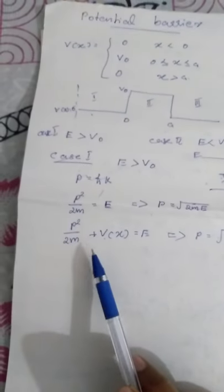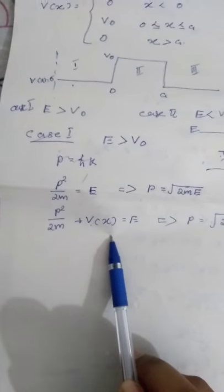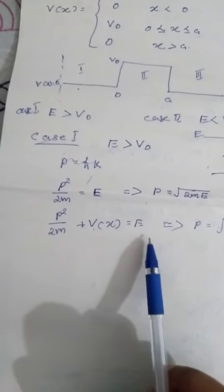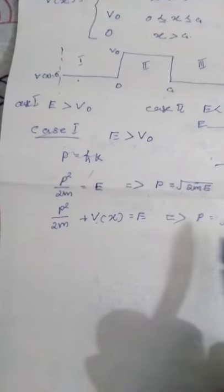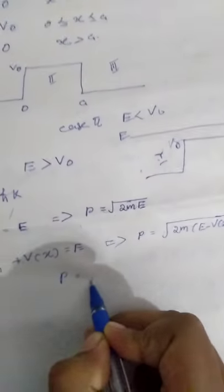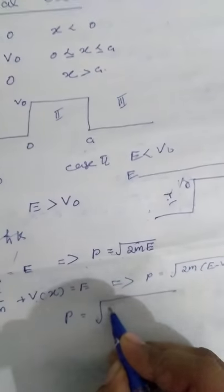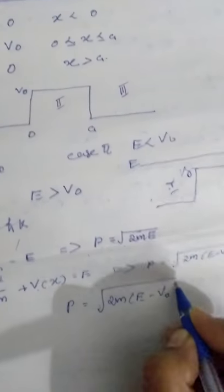In region 2, the potential value is V0. Then P squared over 2m plus V(x) equals E, where V(x) equals V0. That gives P equals root of 2m times (E minus V0) for region 2.